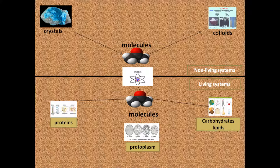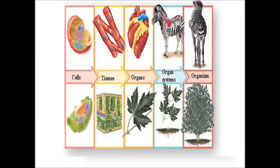In biological systems, molecules are organized in a different way from non-living forms. Molecules of nucleotides, amino acids, and carbohydrates are organized to form much larger macromolecules such as nucleic acids, proteins, and polysaccharides respectively. These molecules are arranged to form protoplasm. In turn, protoplasm is organized to form a cell. Several cells are organized to form a tissue. Tissues are organized to form an organ, organs into organ systems, and organ systems into organisms.